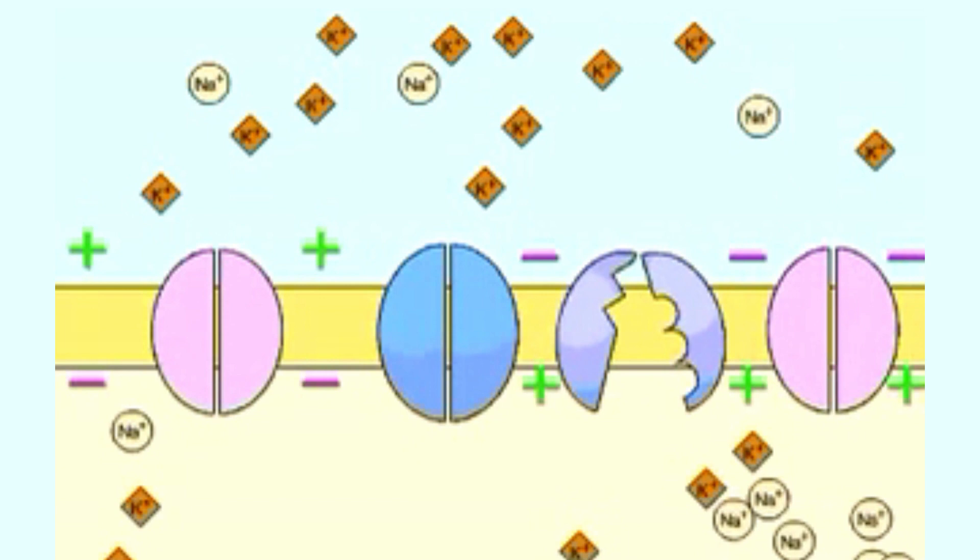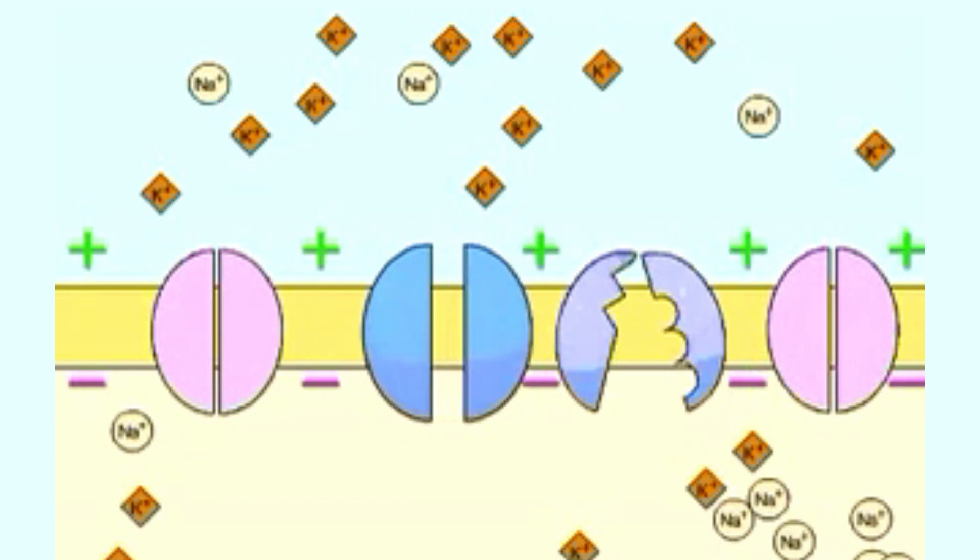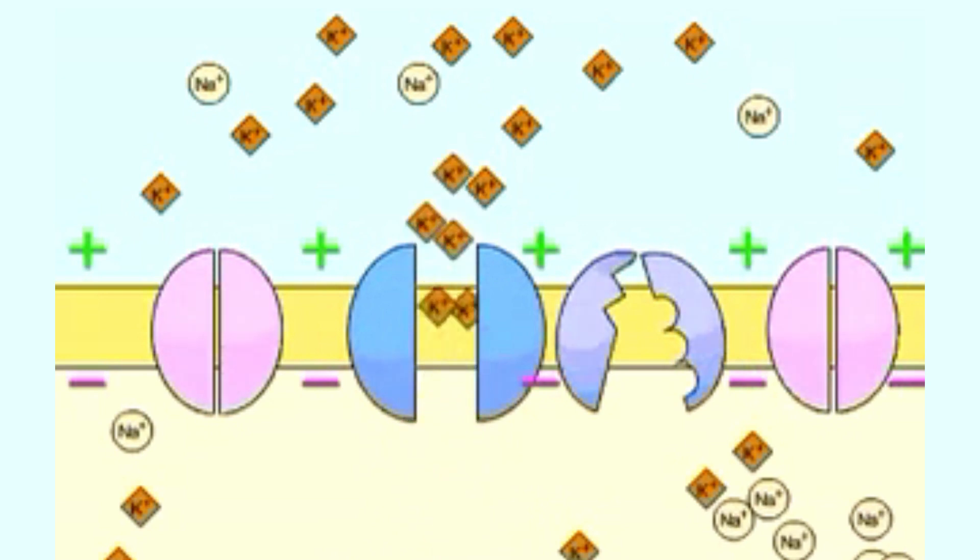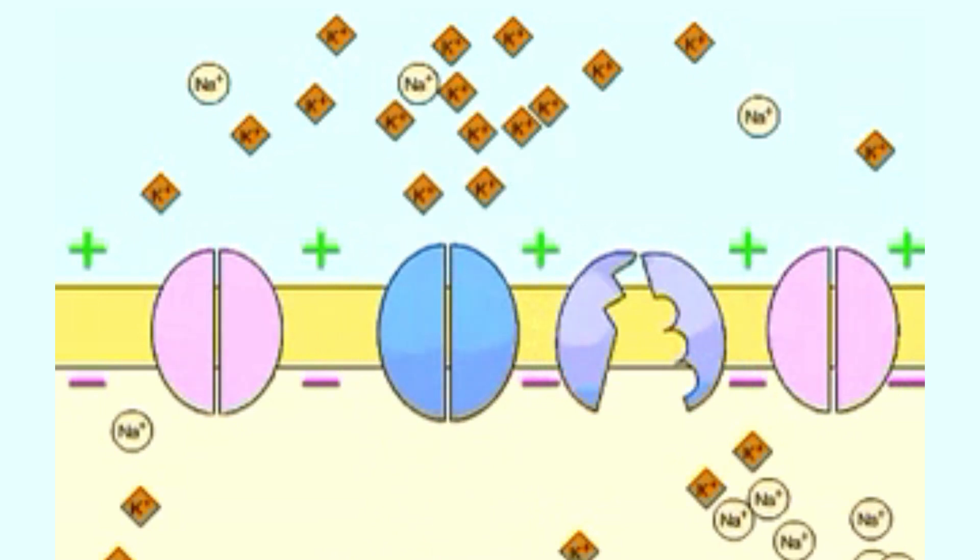In this way, the action potential travels down the neuron like a wave. In the wake of the action potential, potassium leaves the cell, restoring the negative charge inside the neuron.